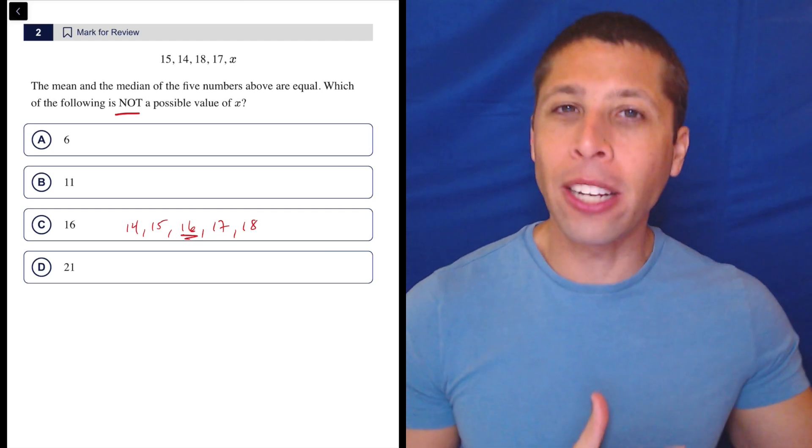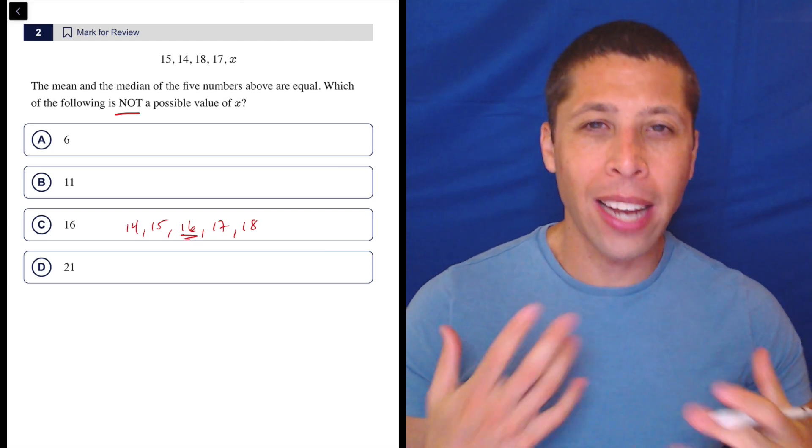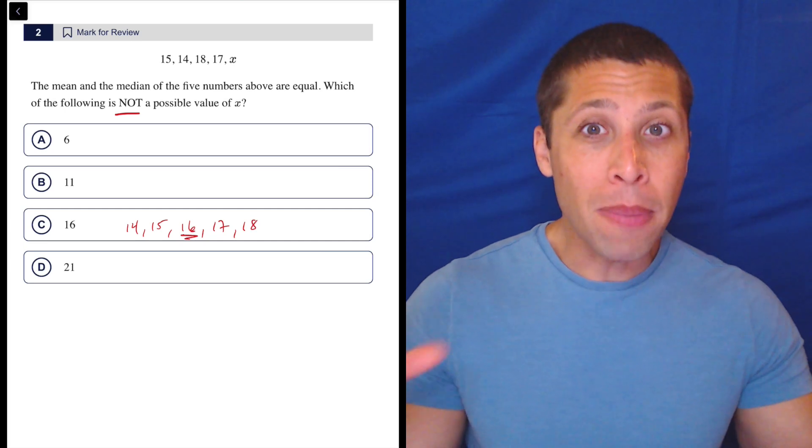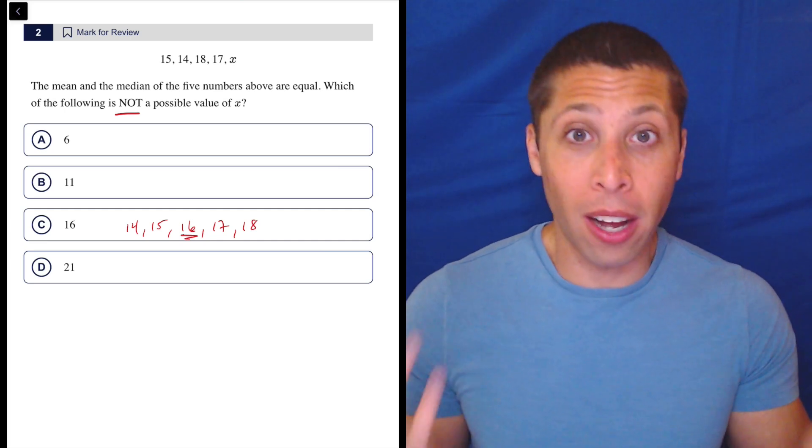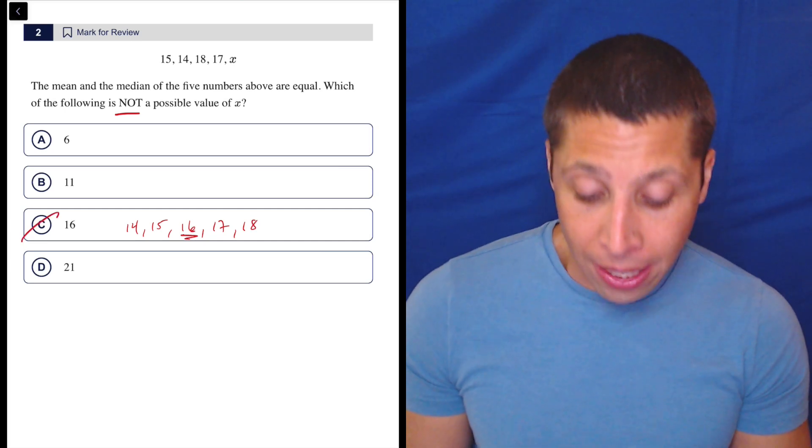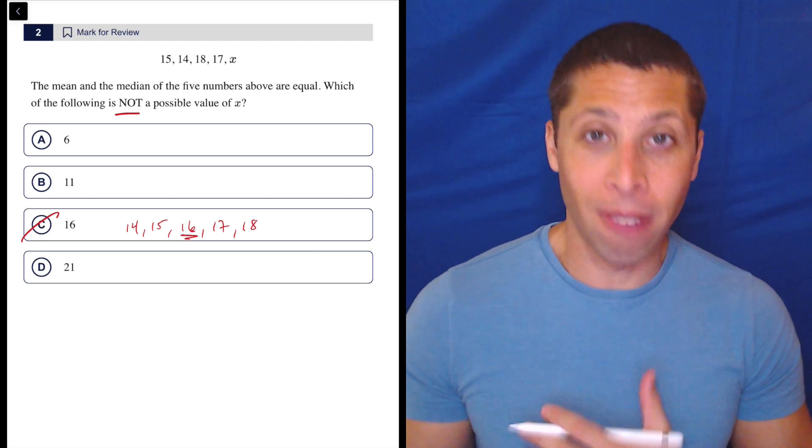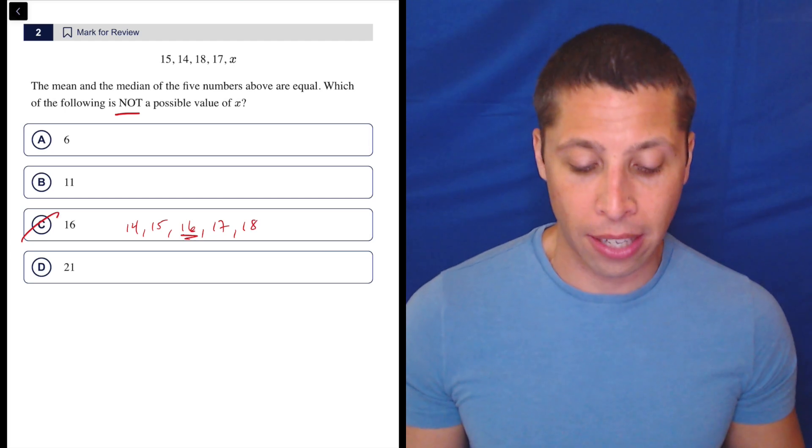So we'll see that in later questions in this set where you kind of have to be able to recognize when you've got a list of numbers in order, the mean is going to be the middle because it is a well balanced set. So this is not the right answer because we want something that doesn't work. But here, the mean and the median are the same. That to me is the most obvious answer.